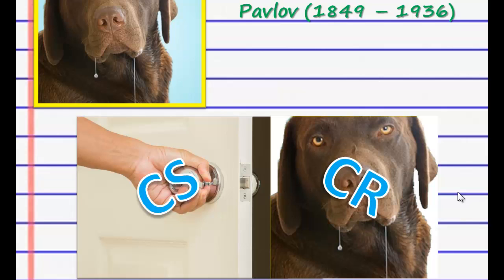Before, when it was the food, it was the unconditioned stimulus producing the unconditioned response. But with the door, it's the conditioned stimulus which produces a conditioned response. The dog has associated the door with the food and now responds to the door in the same way that it responds to the food.